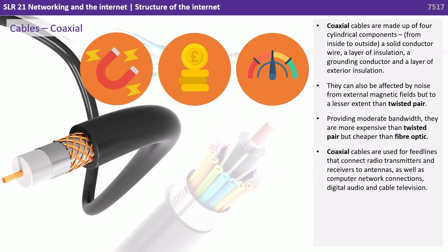Coaxial cables are made up of four cylindrical components: a solid conductor wire, a layer of insulation, a grounding conductor and a layer of exterior insulation. They can also be affected by noise from external magnetic fields, but less than twisted pair. They provide moderate bandwidth. They're more expensive than twisted pair but cheaper than fibre optic. Coaxial cables are used for feed lines that connect radio transmitters and receivers to antennas, as well as computer network connections, digital audio and cable television.